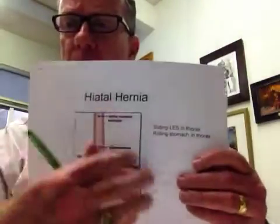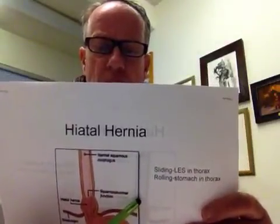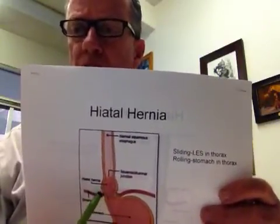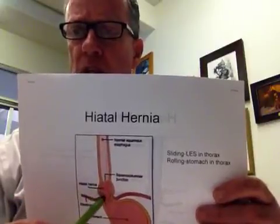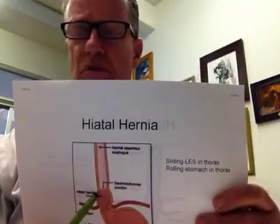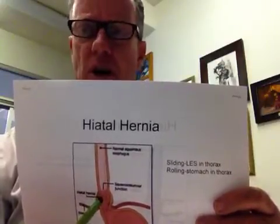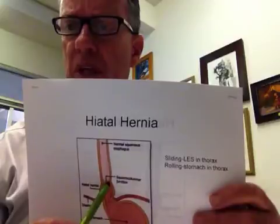We talked in class about hiatal hernia. There are two different kinds, but the sliding hernia results in the stomach actually moving through the diaphragm — the demarcation between thorax and abdomen — up into the thorax. These people are very uncomfortable with a pressure sensation and severe heartburn. The lower esophageal sphincter has actually slid up into the esophagus.